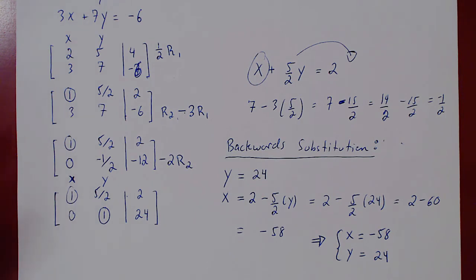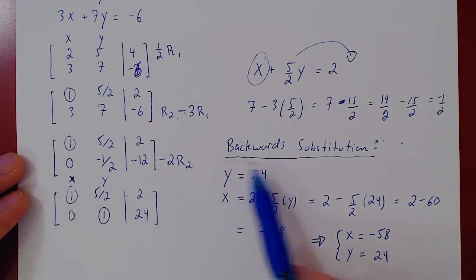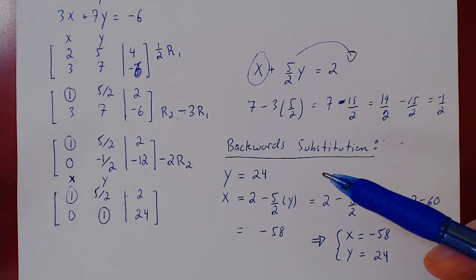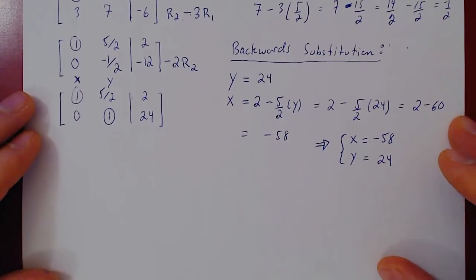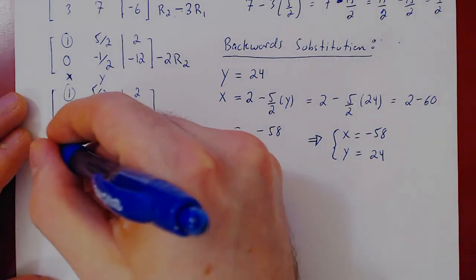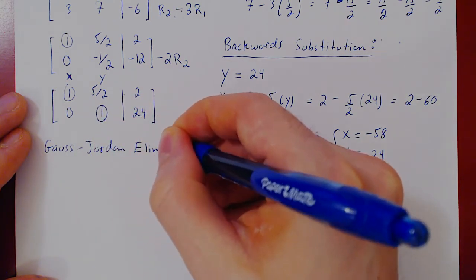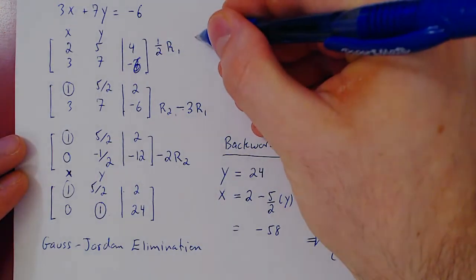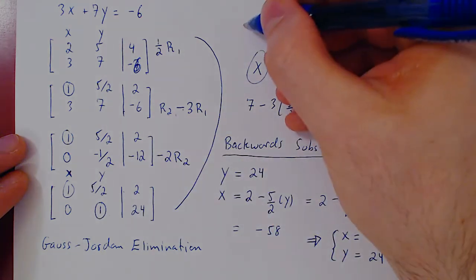We could also use Gauss-Jordan elimination — just to show what the idea is. Everything up to getting all leading 1s with zeros below is called Gaussian elimination. All that Gauss-Jordan elimination adds is: now that every entry below the leading 1s is 0, go backwards and make every entry above equal to 0 as well. This will be very short.